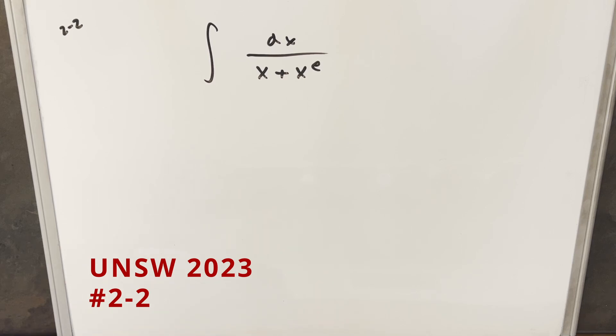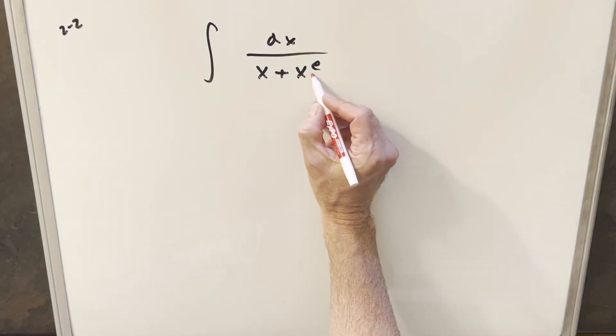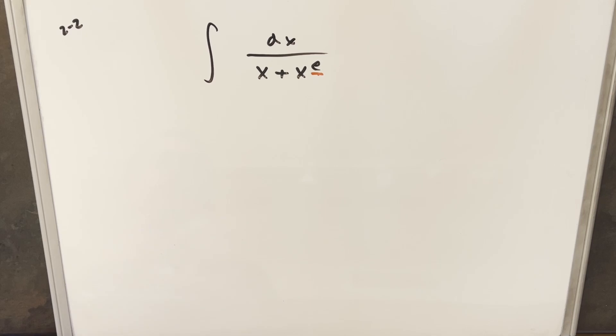We have the integral of dx over x plus x to the e. I was liking the look of this problem just because they gave us an e in the exponent here, which is just a little bit different.